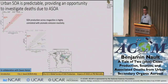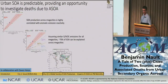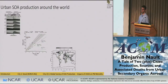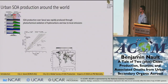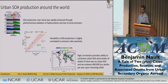In conclusion: SOA production across megacities is highly correlated with aromatic emission reactivity. Assuming similar semi- and intermediate-volatile organic compound emissions across all megacities, we can explain around 70% of SOA. And by removing these urban emission sources, we can reduce the number of deaths per year by 400,000. The three big takeaways: SOA production over Seoul is very rapid, driven by photochemistry of hydrocarbons from local emissions; the variability in SOA production is highly correlated to emission ratio reactivity; and this correlation allows us to constrain urban SOA and estimate around 400,000 preventable deaths per year.